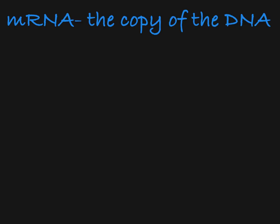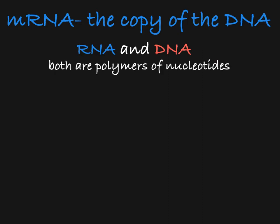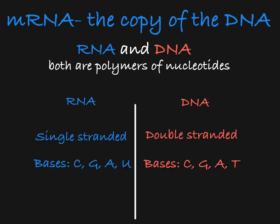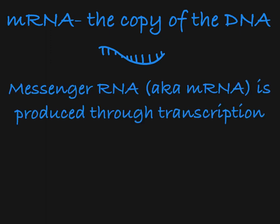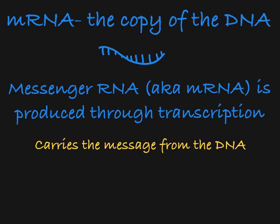This temporary copy of the DNA sequence is in the form of RNA, ribonucleic acid. RNA is like DNA in that it is made up of nucleotides, but unlike DNA, RNA is single-stranded and contains the nucleotide base uracil instead of thymine. There are many types of RNA found in cells. The specific type of RNA that is built in transcription is called messenger RNA or mRNA, because it is carrying the message from the DNA to the protein building machinery in the cell.